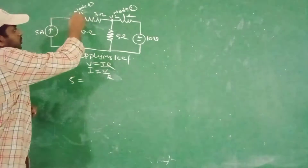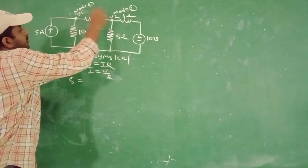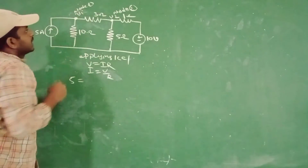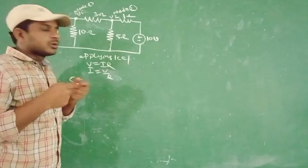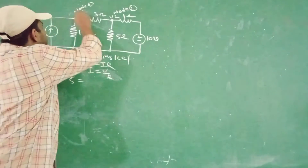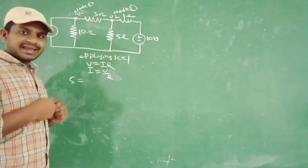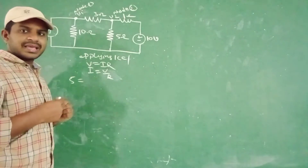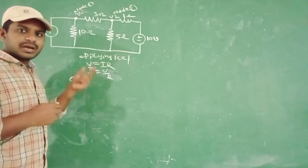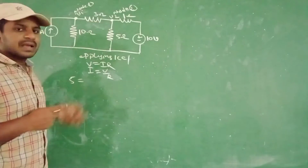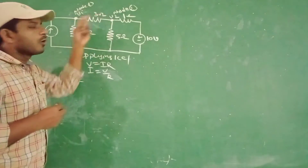From this, first of all, we are going to indicate the node points — where two or more elements are connected to each other. At those particular points we indicate the node points. Already we know that, according to the node points, V is equal to IR and I is equal to V by R. From that, we have to calculate all the different types of current equations from the various node points.